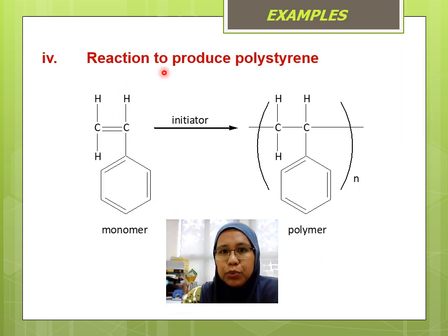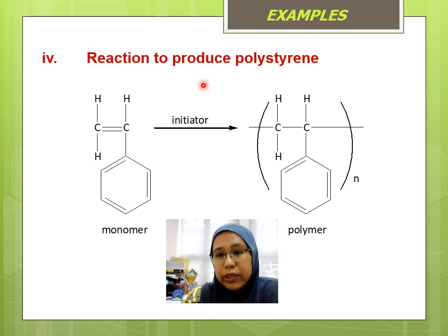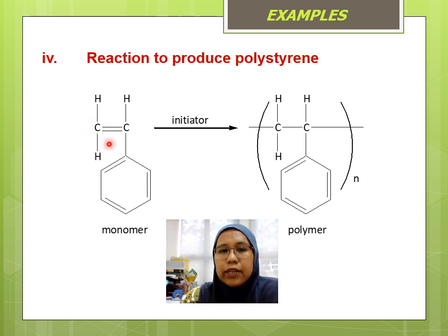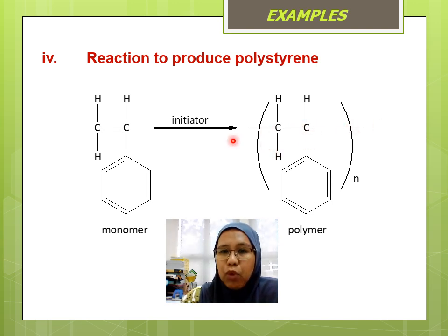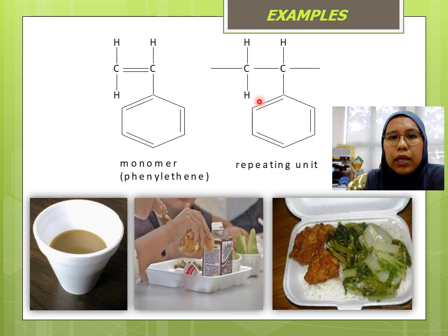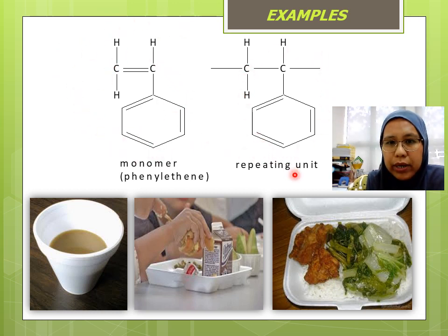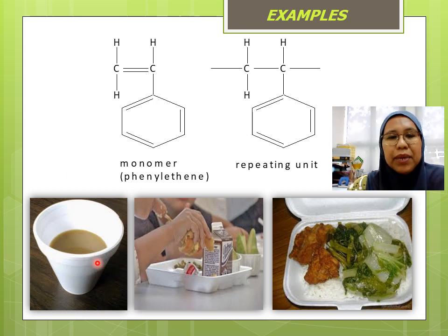The fourth reaction produces polystyrene, which is familiar to us as a food container. The monomer has a benzene ring attached to ethene. The polymer consists of the monomer inside a bracket with two bonds going outside before and after, and N at the bottom right. This monomer is called phenylethen, and the repeating unit is shown on the right. Examples include coffee cups — our colorimeter is made out of polystyrene — and food containers.